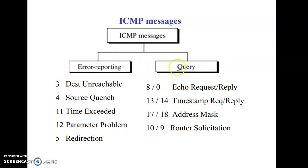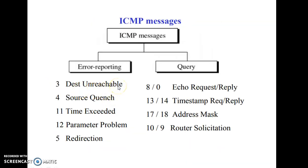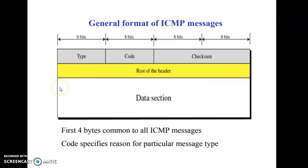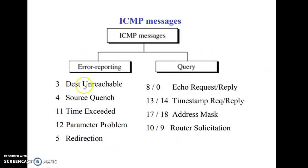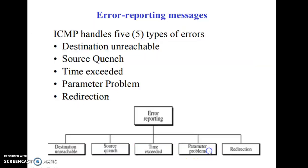The numbers 3, 4, 11, and 12 are the type numbers to which the ICMP message belongs. For example, destination unreachable is assigned type 3. The format of ICMP messages comprises 32 bits or 4 bytes per row. The first 8 bits indicate the type, followed by the code assigned to that message, the checksum for error detection, the rest of the header, and finally the data section. The code field specifies the reason for a particular message type.